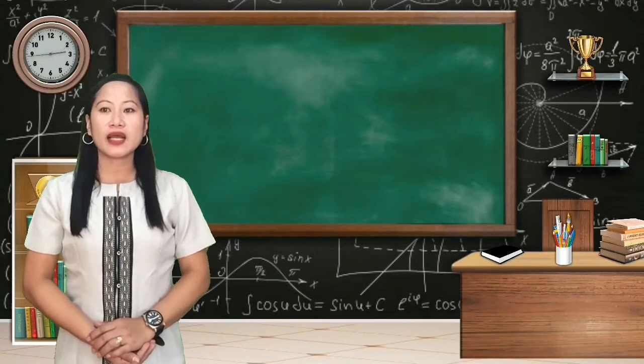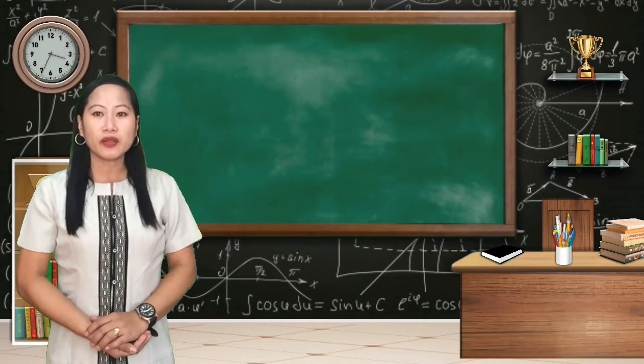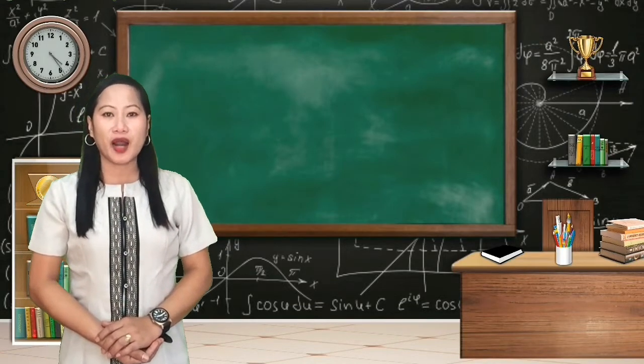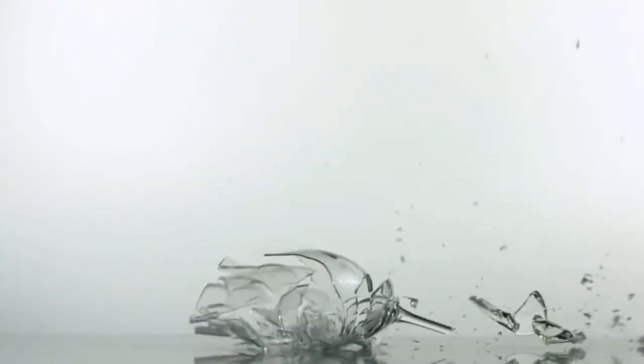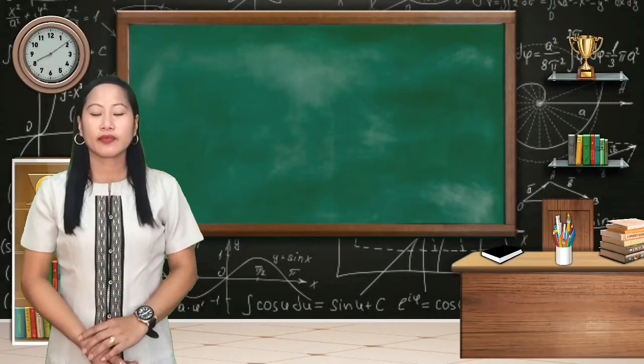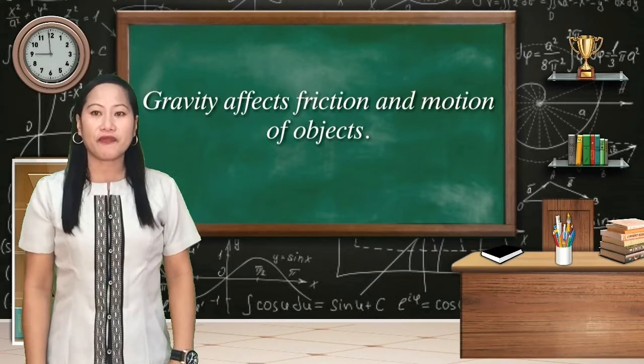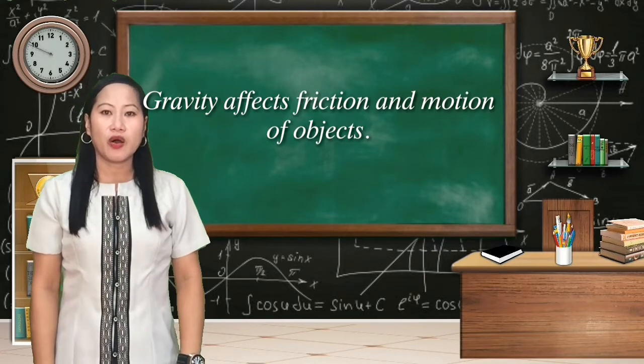The force that causes a glass to drop and fall on the floor is the pull of gravity. Thus gravity affects friction and motion of objects.